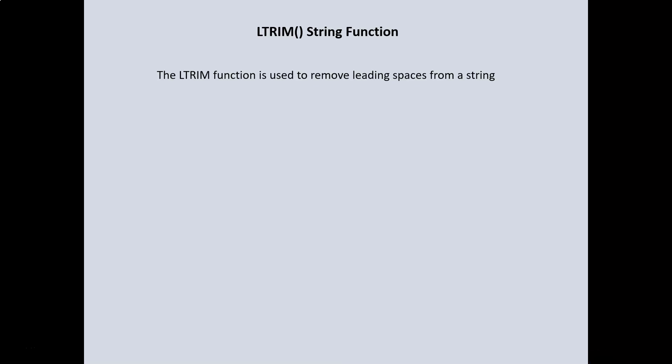The LTRIM function is used to remove leading spaces from a string. The 'L' refers to the left, so you can think of it as spaces that appear before a string character. Let's switch over to SQL Server and see how this works.